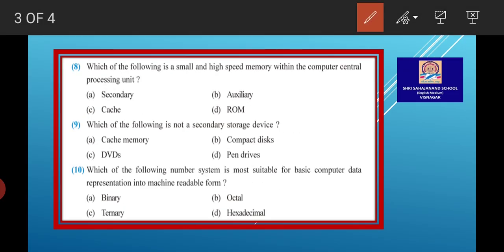Question 8, which of the following is small and high speed memory within the computer central processing unit? Answer C, Cache.